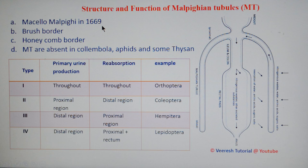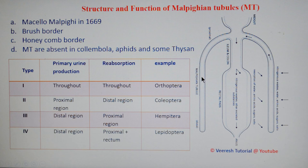The Malpighian tubule is divided into two regions. One-third is the proximal region, which is involved in reabsorptive function and is called the brush border. The two-thirds distal region of the Malpighian tubule is involved in secretion of primary urine and is called the honeycomb border.